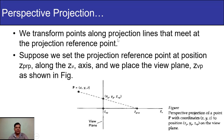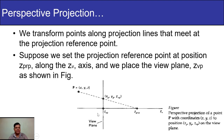We transform points along the projection lines that meet at the projection reference point. In the figure, we have an object point P(x, y, z) with a projection line intersecting the view plane at coordinates (xp, yp, zp), where zp is the position of the view plane along the z-axis and z_prp is the projection reference point on the z-axis. We place the view plane at z_vp and the projection reference point at z_prp — varying the distance between z_vp and z_prp changes the dimensions of the object.